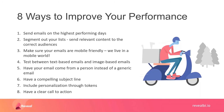Seventh, include personalization through tokens. When you do segmentation and know who the person is, make sure the page they land on after clicking is highly personalized — tied to their name, their company, and what they're looking for. Eighth, have a clear call to action, such as 'Download Now' or 'Watch This Video.' If an email has four calls to action, identify the primary one and make sure secondary and tertiary calls to action are still clear enough to drive measurable metrics.